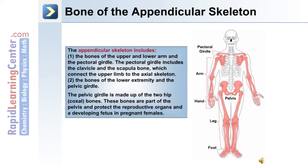Number two are the bones of the lower extremity and the pelvic girdle. The pelvic girdle is made up of two hip or coxal bones, and these bones are part of the pelvis along with the coccyx and sacrum. The pelvis protects the reproductive organs and a developing fetus in pregnant females.